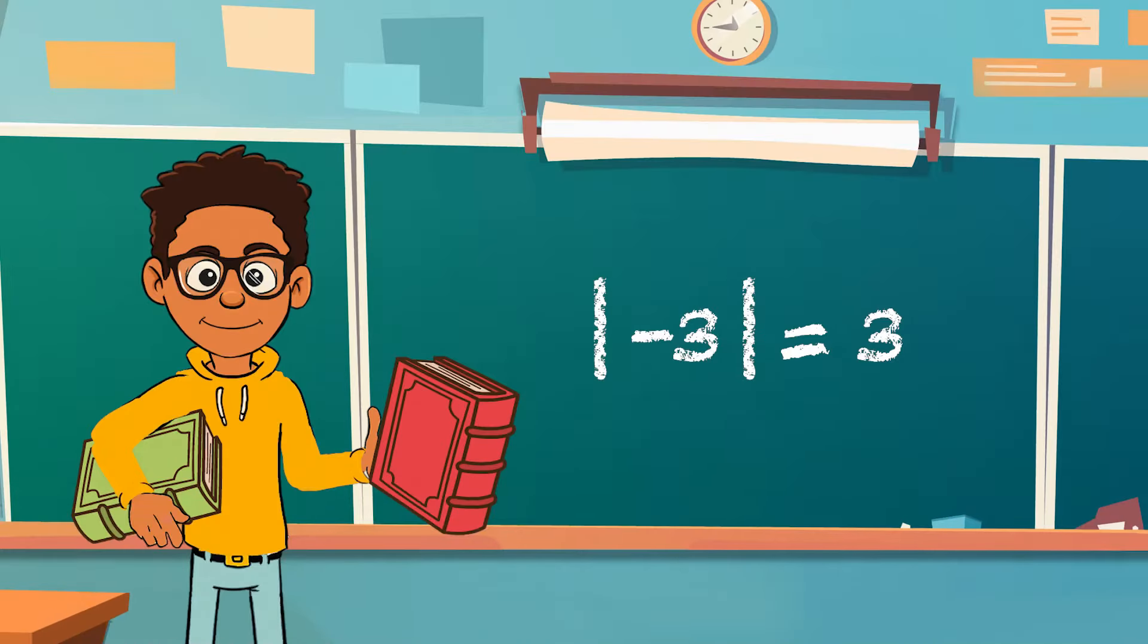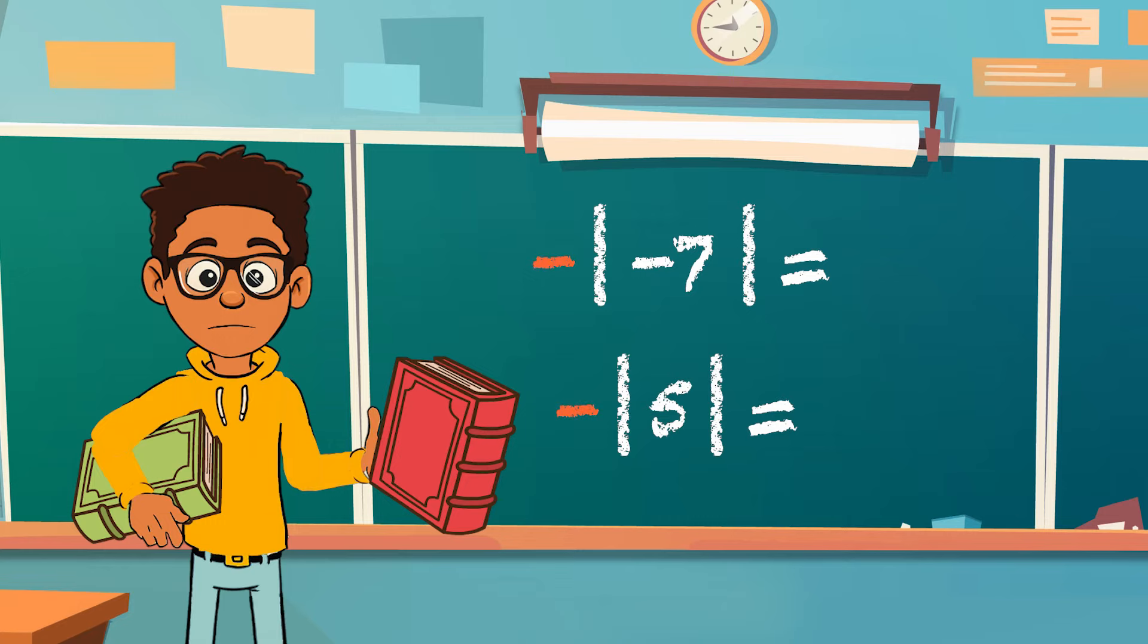So, if the negative symbol is on the inside of the absolute value bars, the value becomes positive. What do you think happens if the negative symbol is on the outside of the bars? In that case, the value is negative.